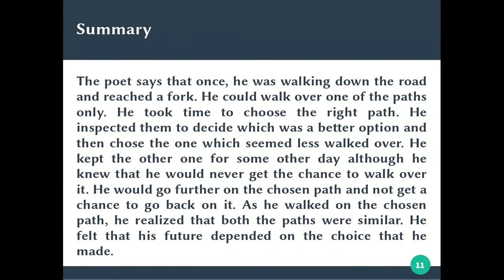Now I am going to give you a brief summary of the whole poem, repeating what is given on the PPT. The poet says that once he was walking down the road and reached a fork — the road was divided into two paths. He could walk on only one of the paths, so he had to decide which was the better option, and he chose the one that was less walked by people.